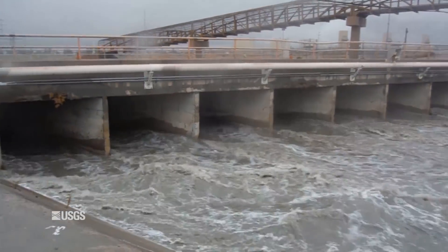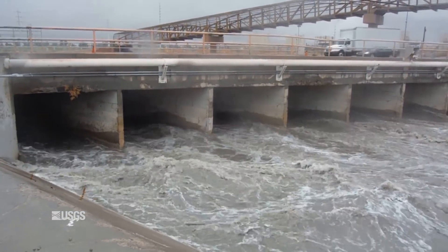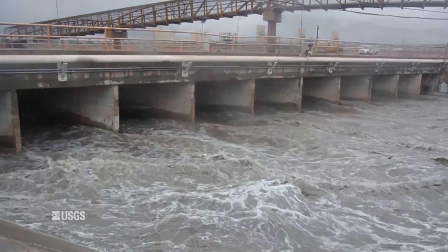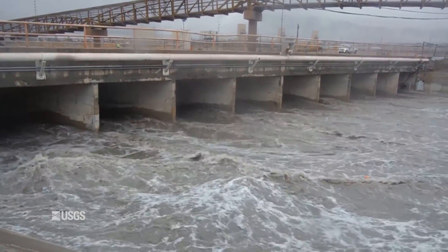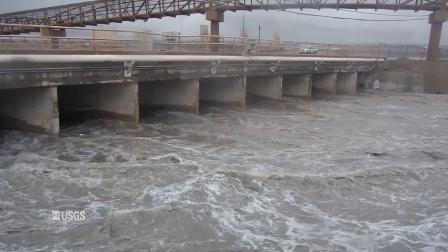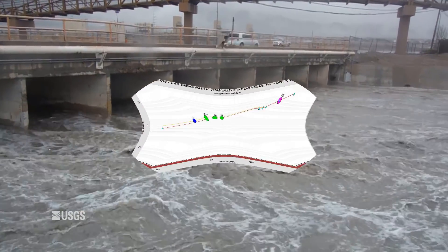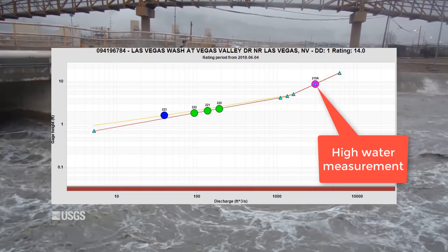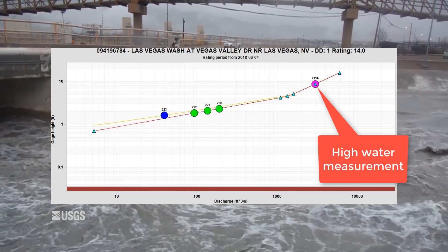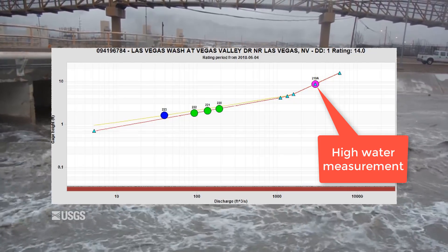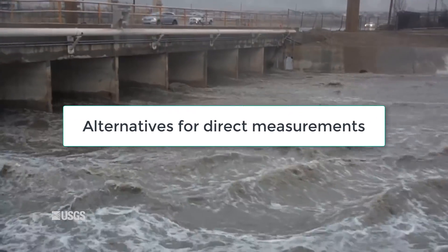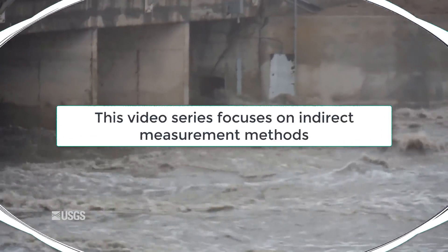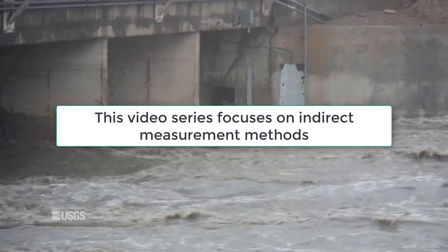The bridge might be out. There might be too much dangerous debris to put anything in the water. The flood might have occurred at 2am and lasted for an hour. These types of high water events are usually very important parts of a stage discharge relationship, though. Just because we can't make a direct measurement doesn't mean we give up on defining the rating. There are alternatives for making a direct measurement, and this video series focuses on indirect measurement methods.